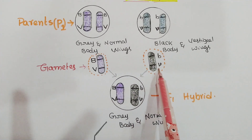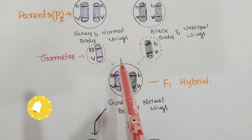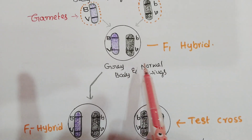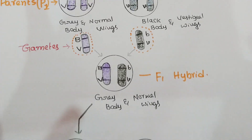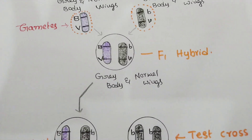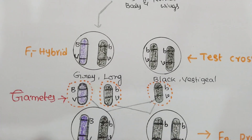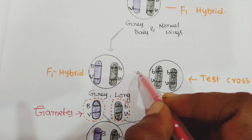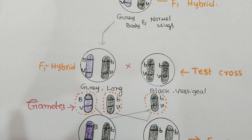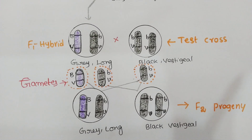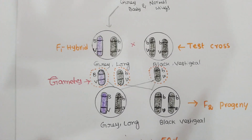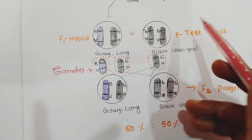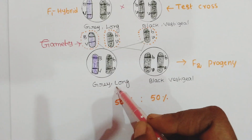When these gametes combined, they form an F1 hybrid having dominant characters — grey body, normal-winged Drosophila. When the F1 hybrid was subjected to a test cross — crossed with a double recessive parent — we get the progeny. From the F1 hybrid two types of gametes come, while from the double recessive parent only one gamete comes. They fuse randomly to give F2 progeny.